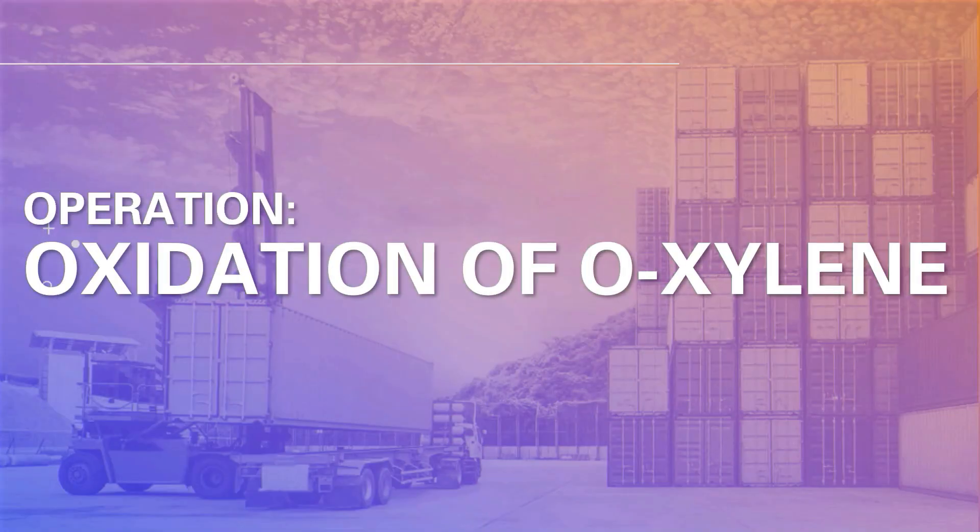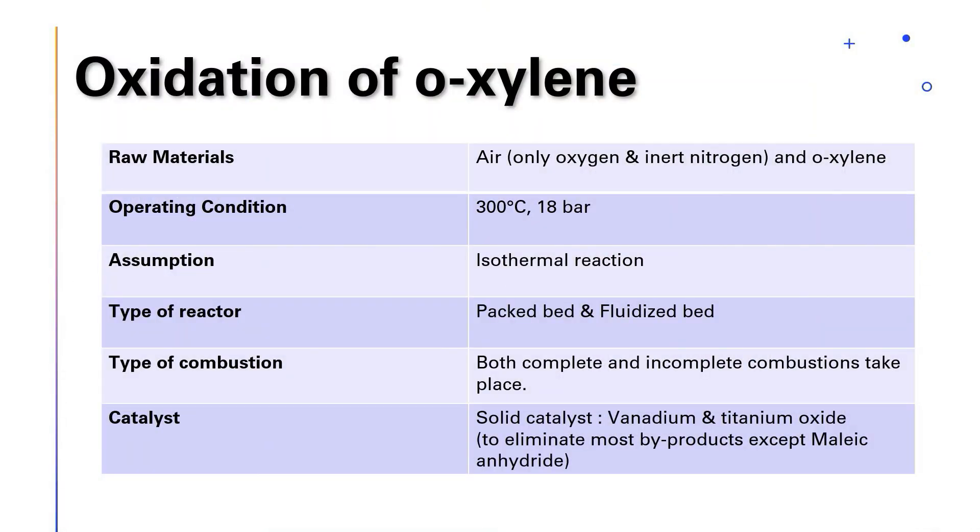Oxidation of o-xylene. The raw materials involved in the oxidation of o-xylene are air and o-xylene. This process will operate at temperature 300 degrees Celsius at 18 bar and the reaction is assumed to be isothermal. Packed bed and fluidized bed reactor are suitable for the reaction. In this reaction, both complete and incomplete combustion take place. Solid catalysts such as vanadium and titanium oxide plays an important role in eliminating most byproducts except maleic anhydride.